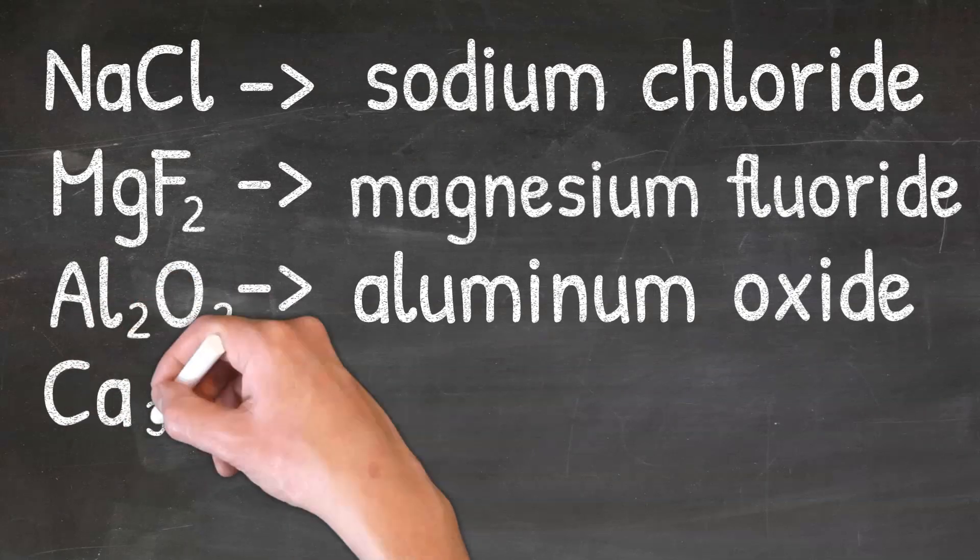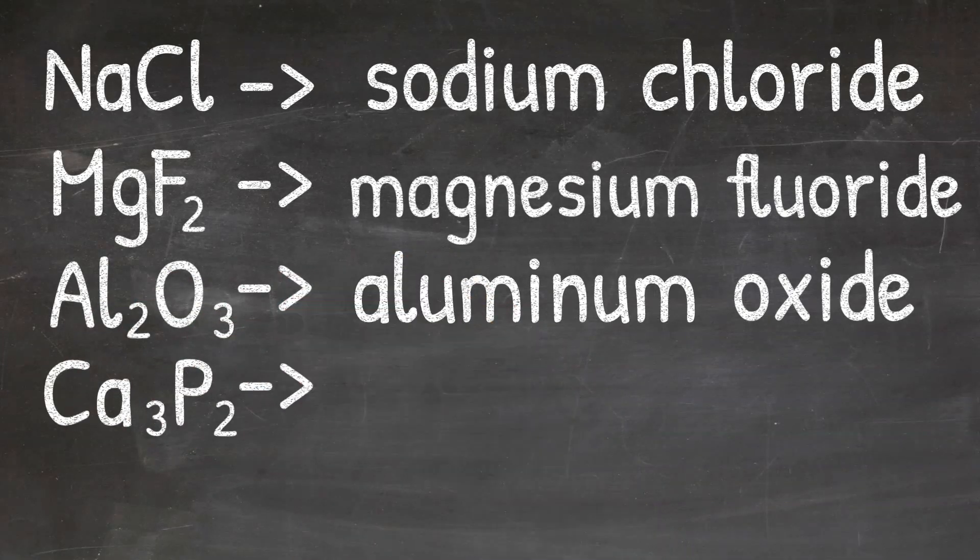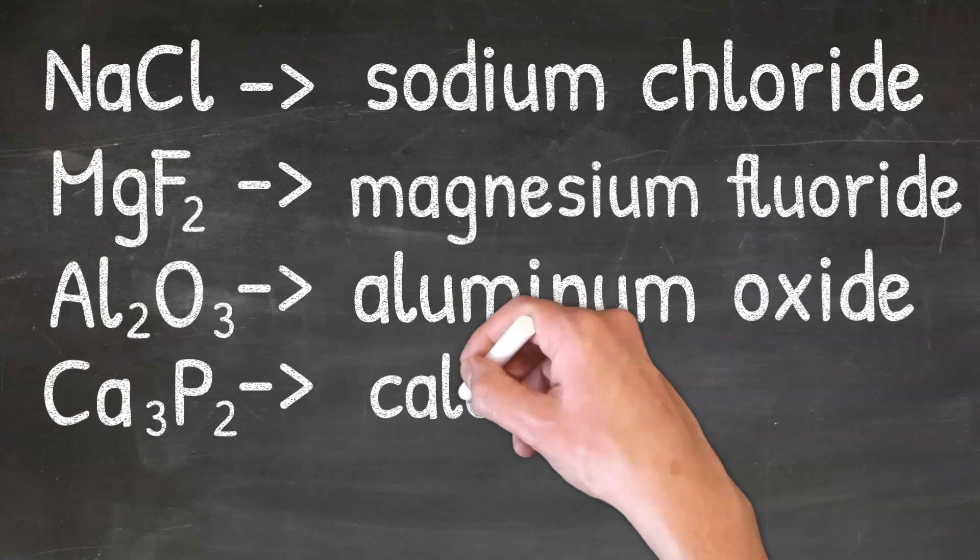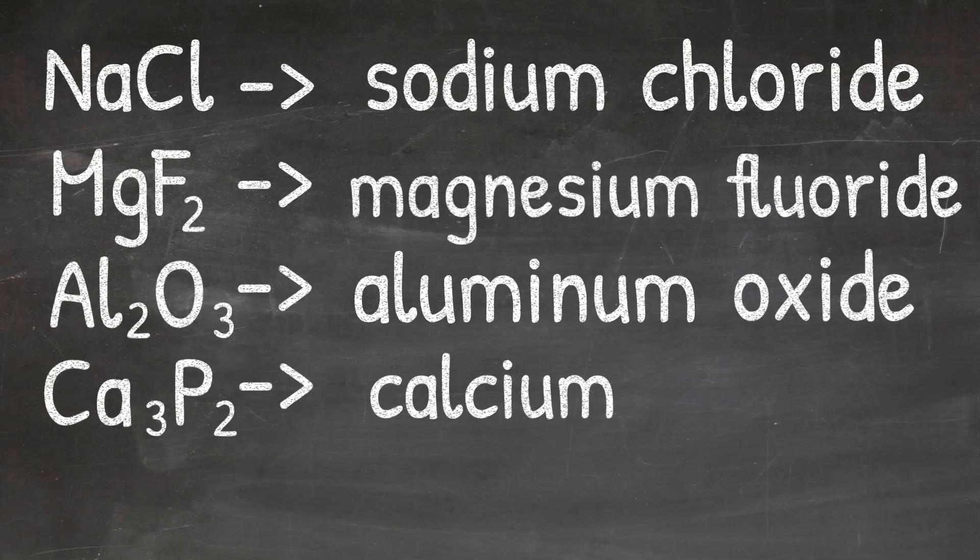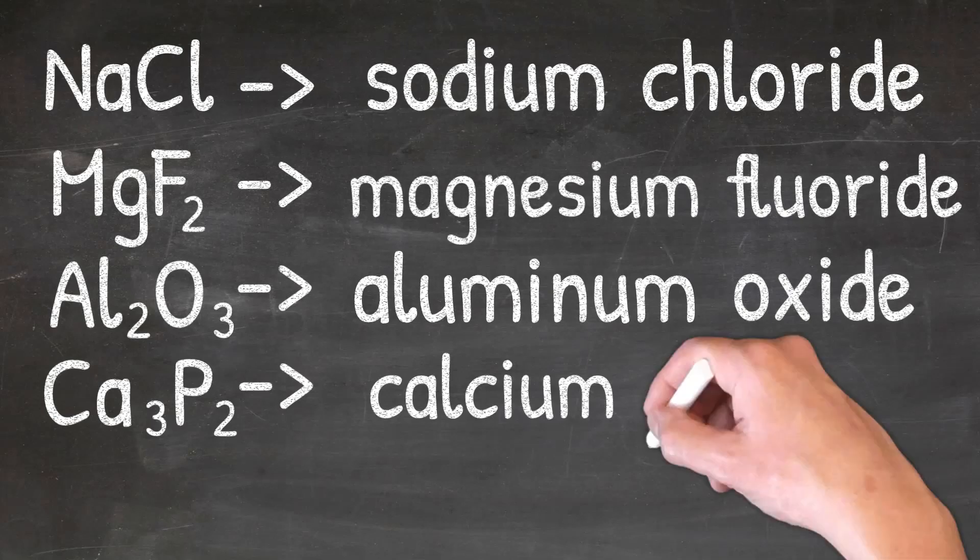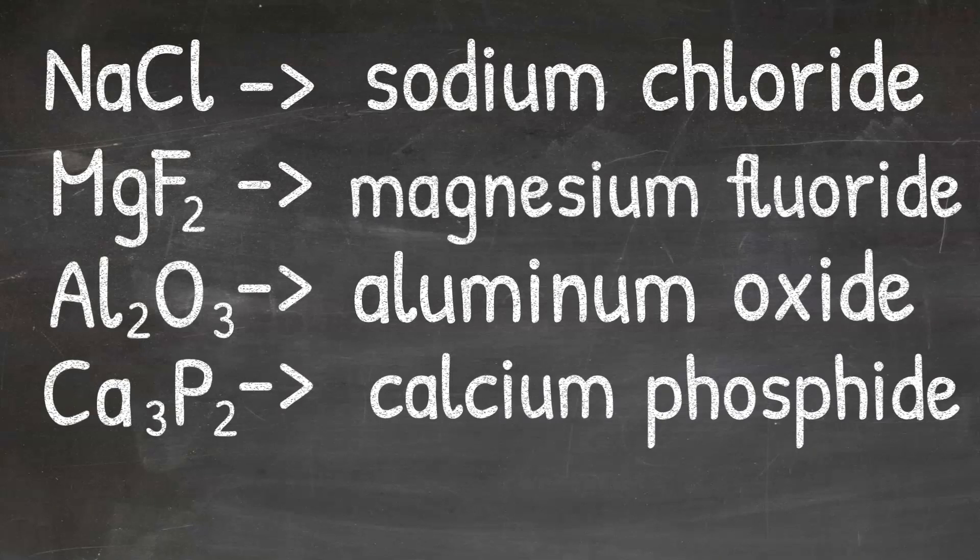In our fourth example, we'll look at Ca3P2. Again, I'll look at the first element, and it's calcium, so I'll write the name calcium. And then my second element is phosphorus, and when I change the ending of phosphorus to -ide, I'll get phosphide. So the name of Ca3P2 would be calcium phosphide.